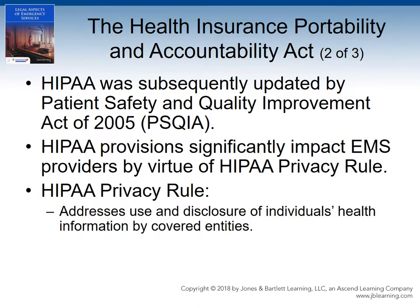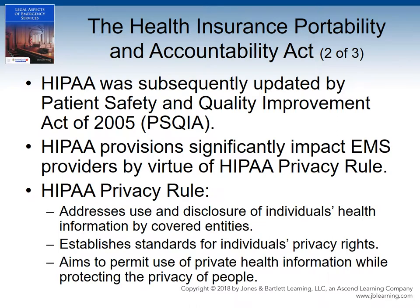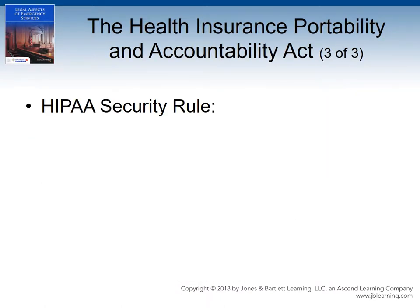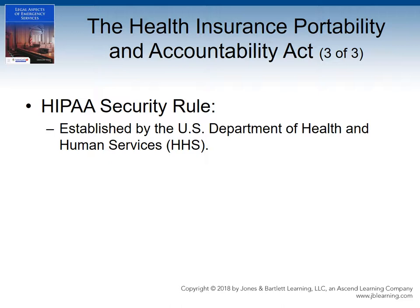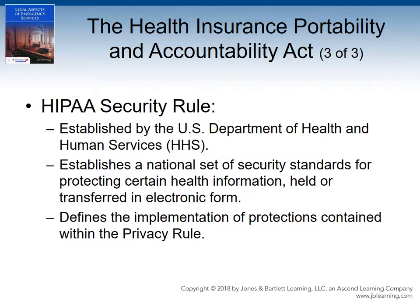The Privacy Rule addresses the use and disclosure of individuals' health information by covered entities, such as ambulance services. The rule establishes standards for individuals' privacy rights and attempts to permit the use of private health information as needed for the efficient functioning of the health care system while also protecting the privacy of patients within that system. The Security Rule was established by the U.S. Department of Health and Human Services to standardize security requirements and protocols for certain health information held or transferred in electronic form. The Security Rule integrates many of the protections within the Privacy Rule to further protect private health data.